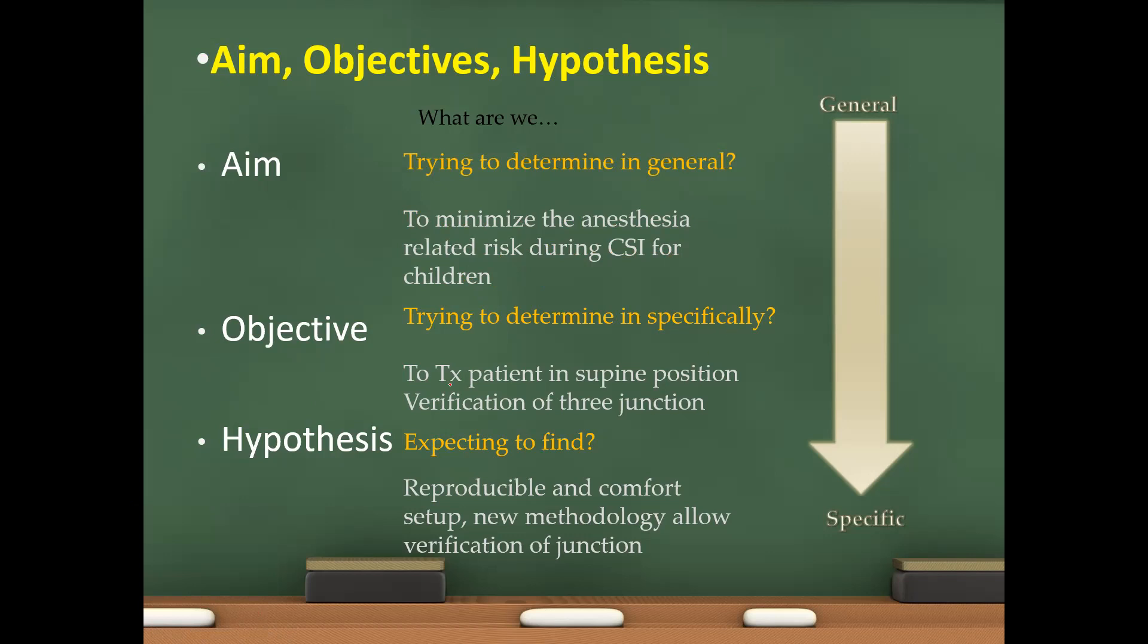An objective: trying to determine specifically. To treat the patient in supine position, verification of three junctions. And that's the problem, of course, when you're treating with supine position. So, hypothesis: expecting to find. Reproducible and comfort setup. New methodology allow verification of junction.